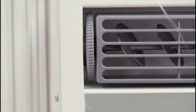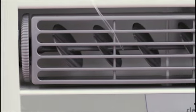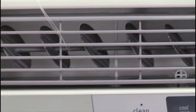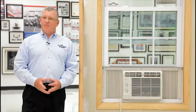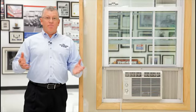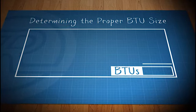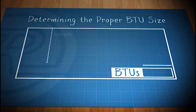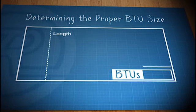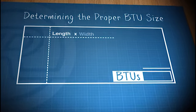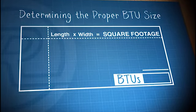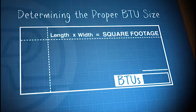So how do you find the right BTU size air conditioner for your room? It's quite simple. You simply measure the square footage of the room. This is the length of the room multiplied by the width of the room. This will give you your square footage.